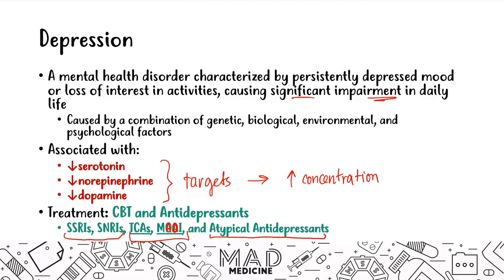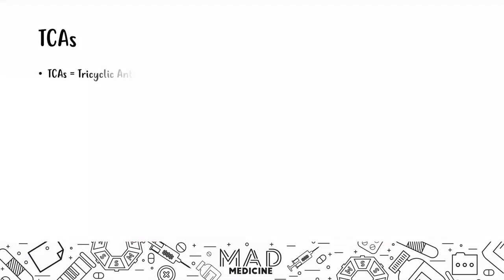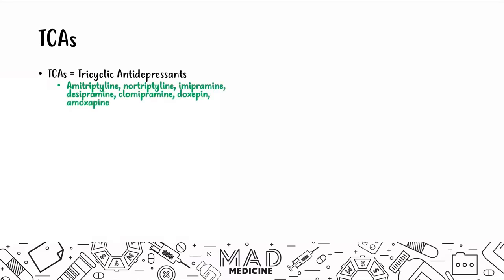Let's discuss tricyclic antidepressants. TCAs are not the first-line treatment for depression — they're usually second-line. These are no longer used as they used to be, since we now have SSRIs and SNRIs. The types of TCAs you need to know are amitriptyline, nortriptyline, imipramine, desipramine, clomipramine, doxepin, and amoxapine.